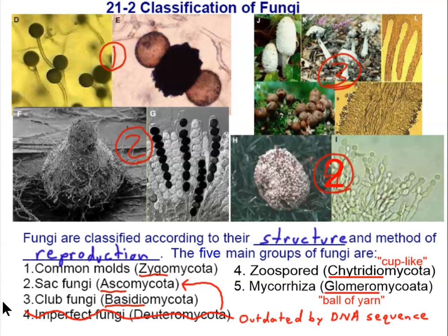The first thing to note is that there are both common names and phylum names here, and the phylum names are what are in parentheses. So we've got Zygomycota, Ascomycota, Basidiomycota, Chytridiomycota, and Glomeromycota.